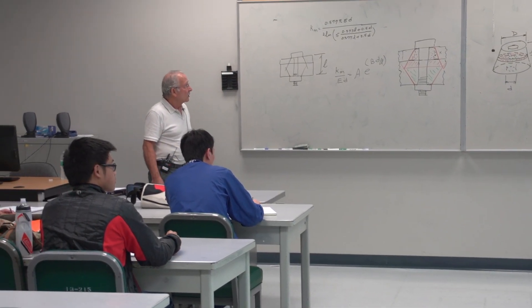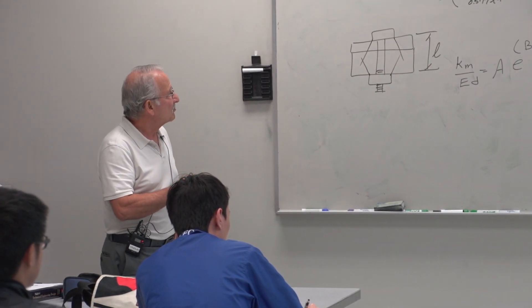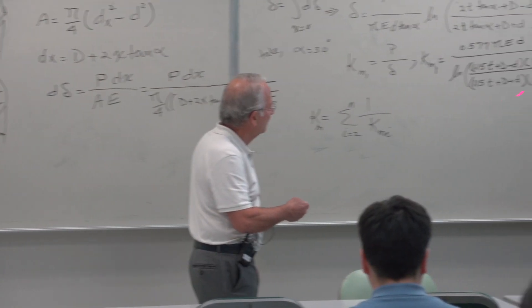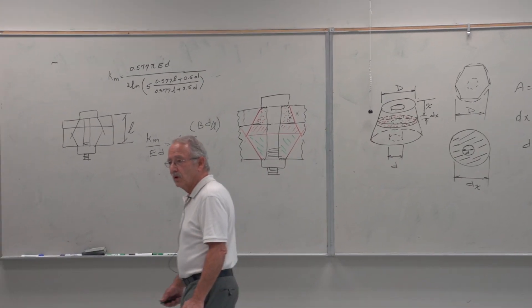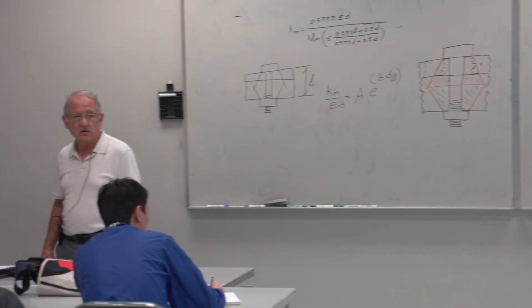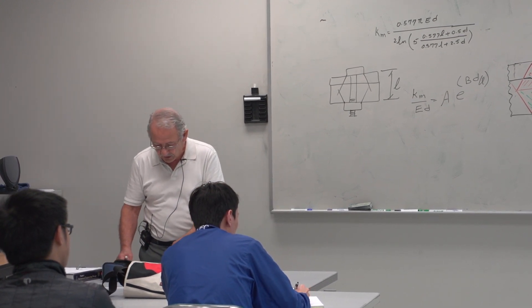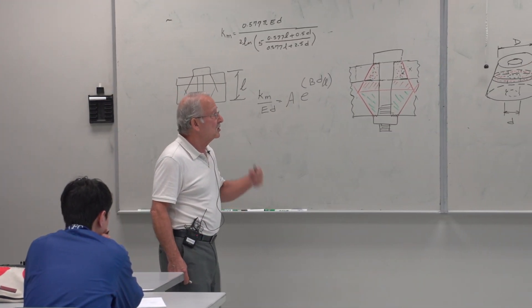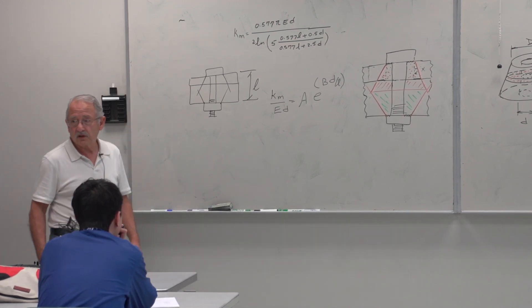I suggest you program both the general frustum stiffness equation and the same-material simplified equation into your calculators. Don't go through calculating these in an exam — it's too time consuming. Just make sure your program is correct, and when you use it, show what values go in: D equals half inch, E equals 30 times 10 to the 6, L equals 3 inches, and so on.